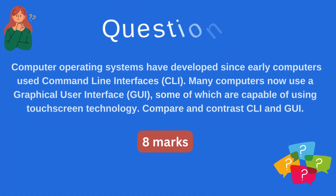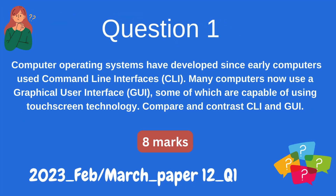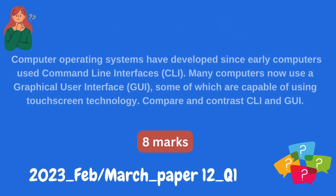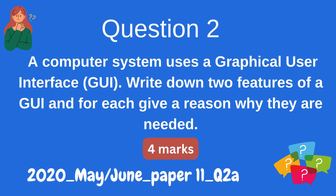Question 1: Computer operating systems have developed since early computers used command-line interfaces, CLI. Many computers now use a graphical user interface, GUI, some of which are capable of using touchscreen technology. Compare and contrast CLI and GUI. Question 2: A computer system uses a graphical user interface, GUI. Write down two features of a GUI and for each give a reason why they are needed.